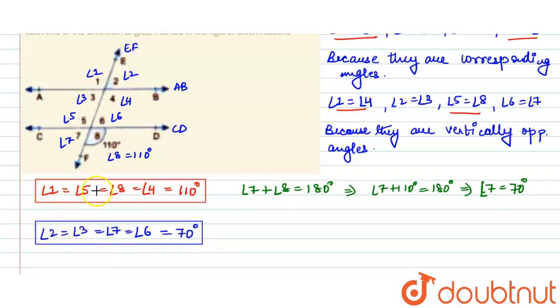So we got the values of all the angles: angle 1, 2, 3, 4, 5, 6, 7, and 8. These are 110 and 70 respectively for the respective angles. So hence we are done with the question.